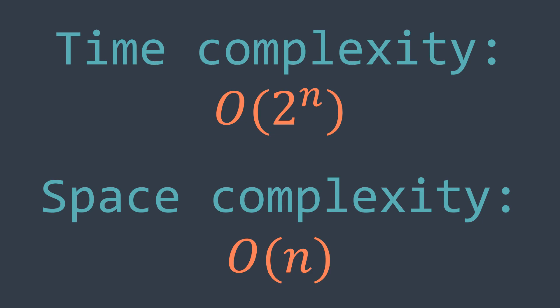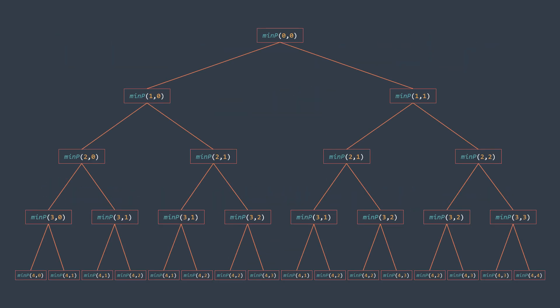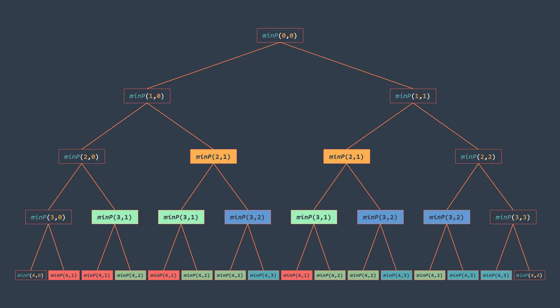Unlike the greedy solution, the recursive solution works, but it has an exponential time complexity which is inefficient. The reason is that if we look at the recursion tree, we find many repeated recursive calls — we are doing the same work again and again, uselessly. To optimize the recursive solution, we just need to find a way to avoid repeating the same work.